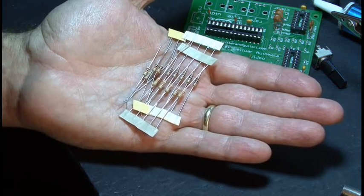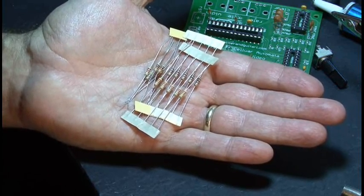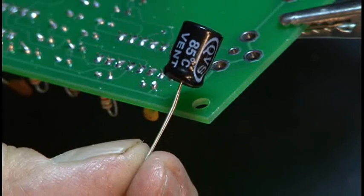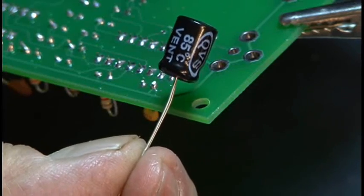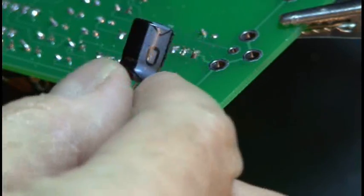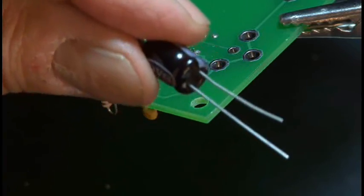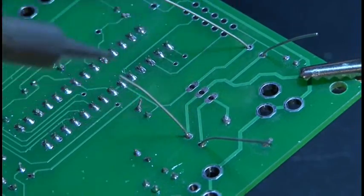Now we have 16 resistors to solder in place. Again, these are non-polarized, so either end can go in either hole. Now we're ready for the two electrolytic capacitors. These are usually always identified by the negative side with a stripe, and also the longer lead is usually always the positive.